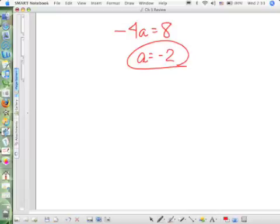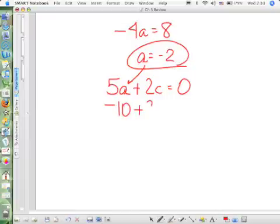Number 13 is very easy. I can figure out what A is right now, negative 2. A is negative 2. Let's look at my next equation. 5A plus 2C equals 0. Well, I know what A is, which leaves me with just one letter left. If A is negative 2, then negative 10 plus 2C equals 0. Add 10, divide by 2, C is 5.